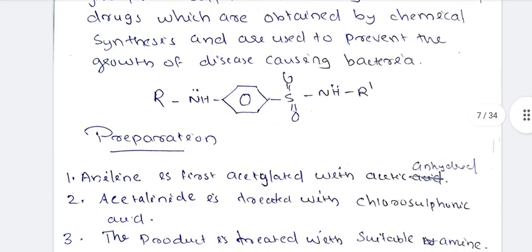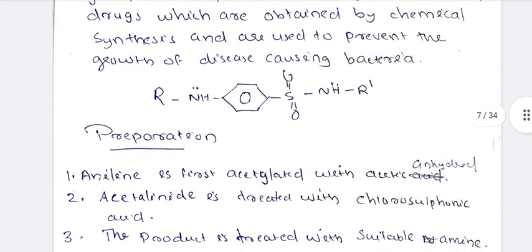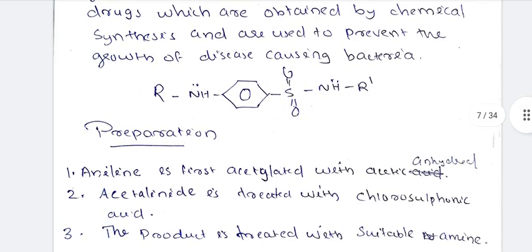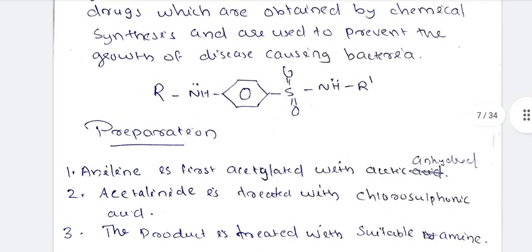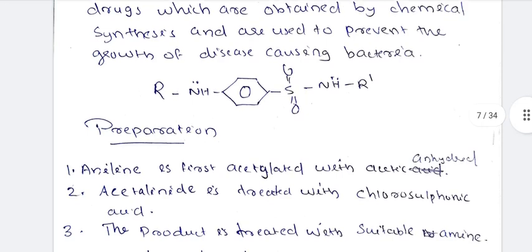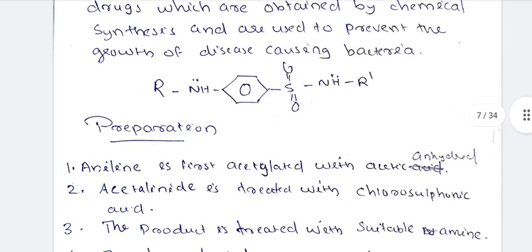The starting material is aniline. Aniline is treated with acetic anhydride to form N-H-CO-CH3. Then we treat with chlorosulfonic acid — SO2Cl — as the next step.